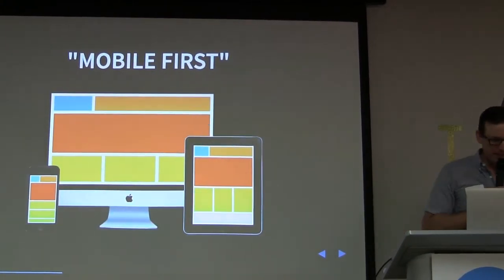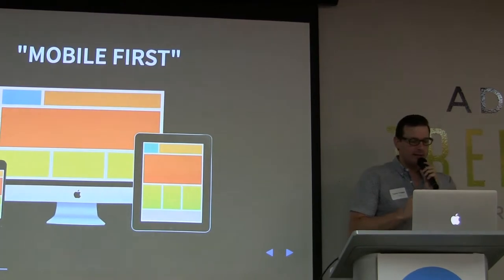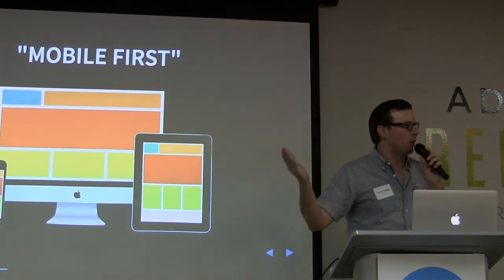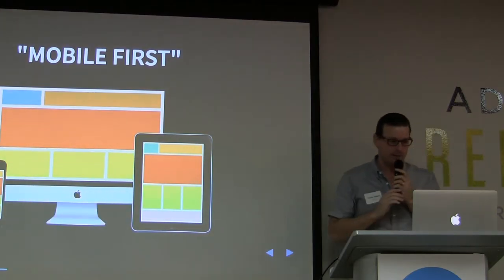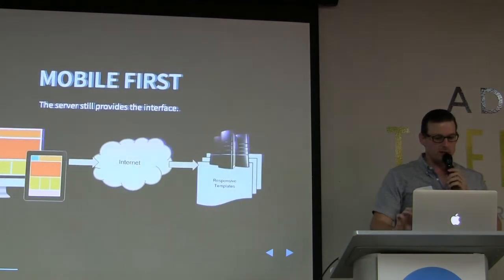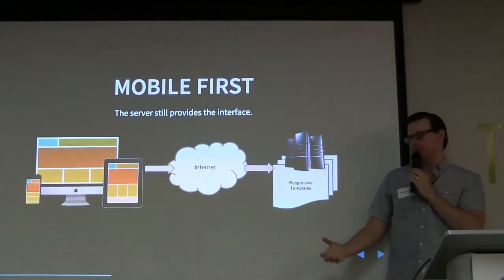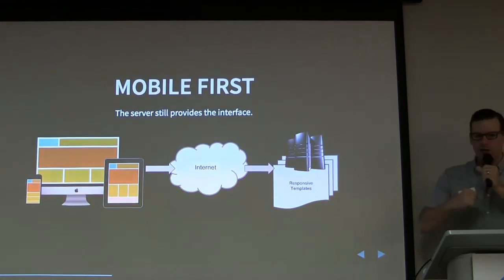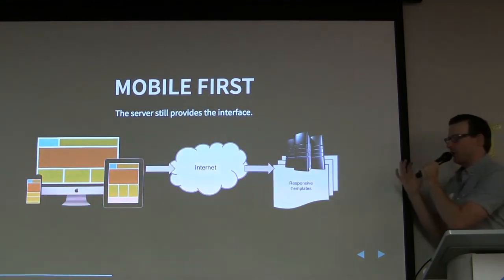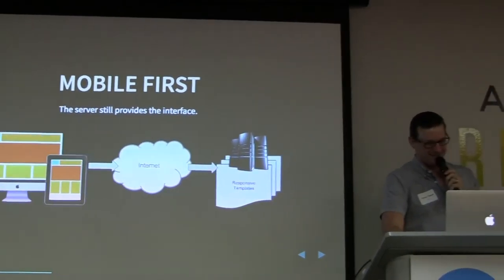Mobile first is when you take a website and make it scrunch up so it looks really good on mobile devices. And this is what we came up with. Even in mobile first, nothing has really changed as far as structure is concerned. That mobile device is sending a request to the server, the server is going to the CMS, churning, creating a responsive template — but the server is still building the template. That server then sends a responsive template back to the client, the client renders it and says, it looks great.